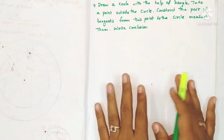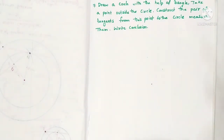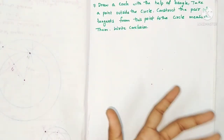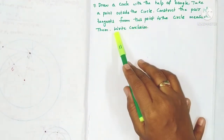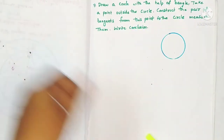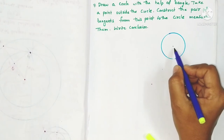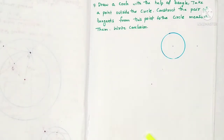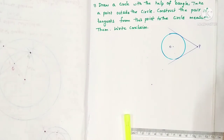In our previous videos we have seen the construction of tangents to a circle using a compass. But here we have to draw a circle with the help of a bangle and follow the same process. We take a point outside the circle and construct the pair of tangents. For the rough diagram, this is the circle and we want to locate the center, then from the external point draw two tangents.